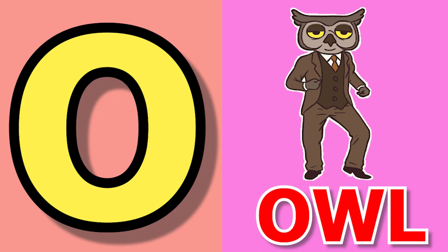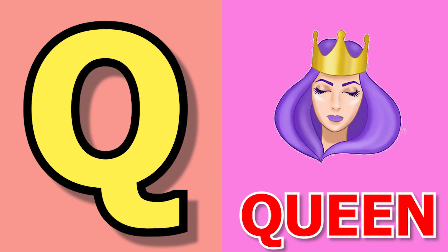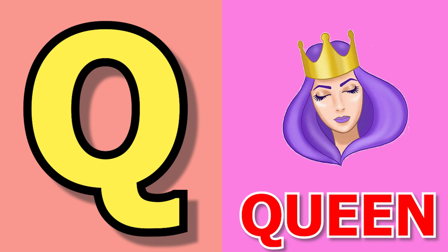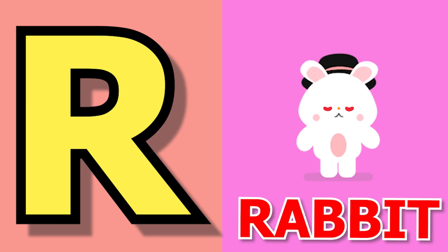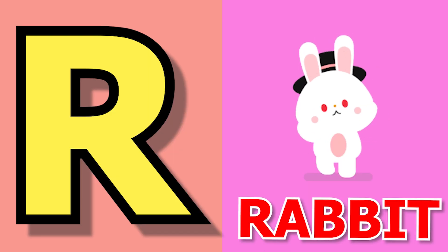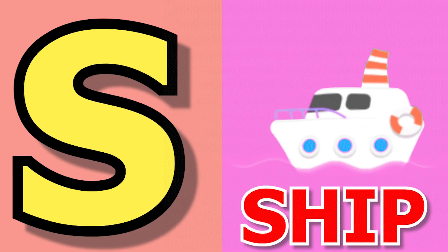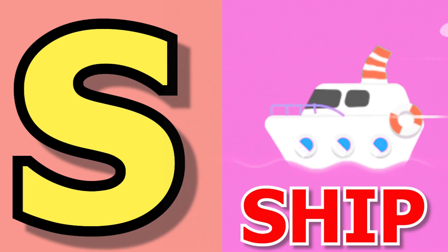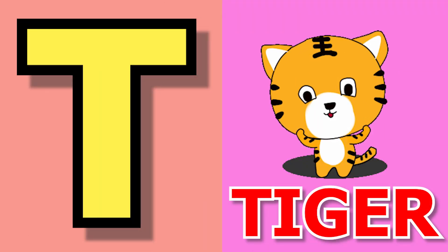O for owl, owl means ullu. P for parrot, parrot means tota. Q for queen, queen means rani. R for rabbit, rabbit means kargosh. S for ship, ship means zahaj.